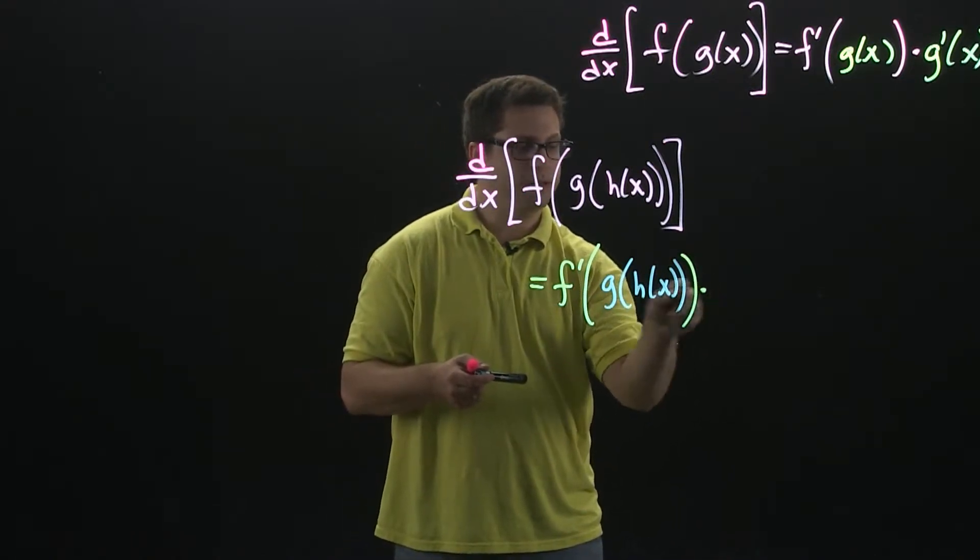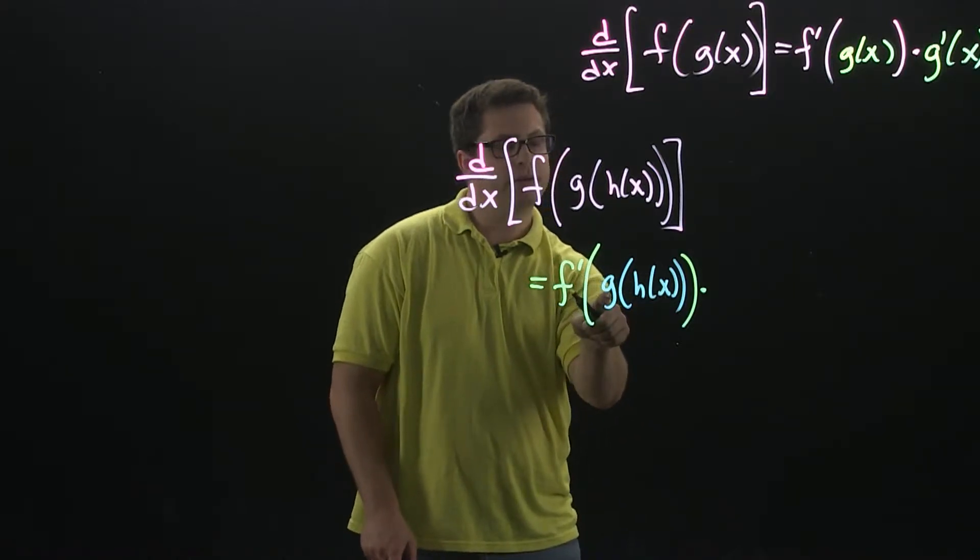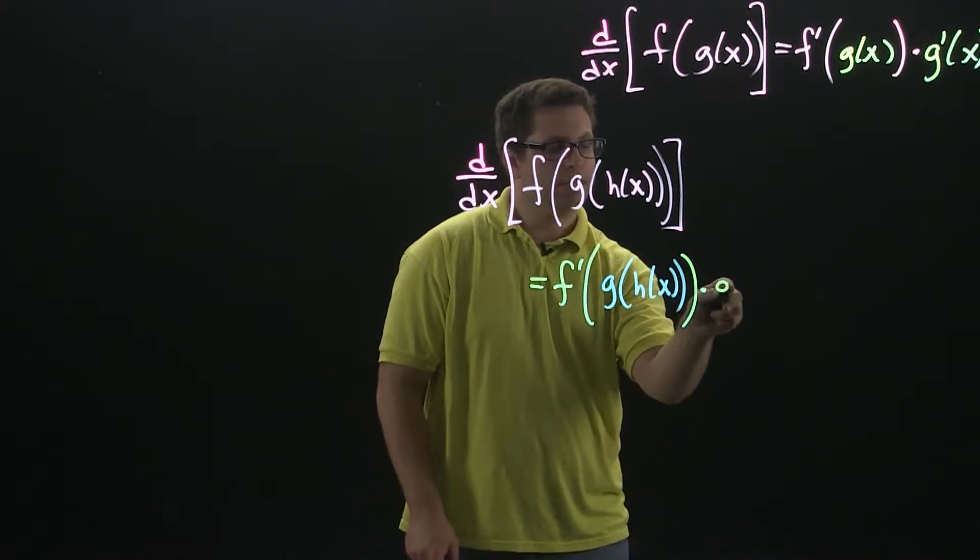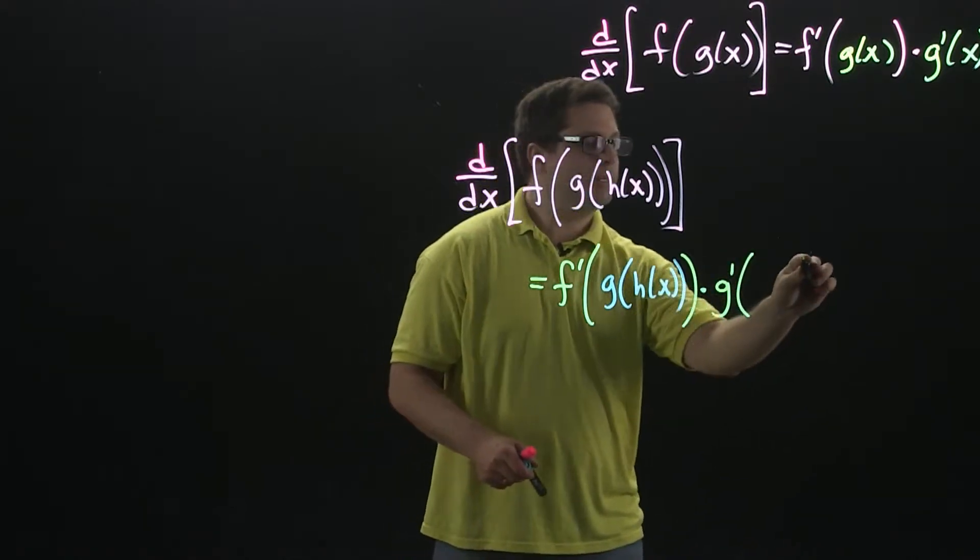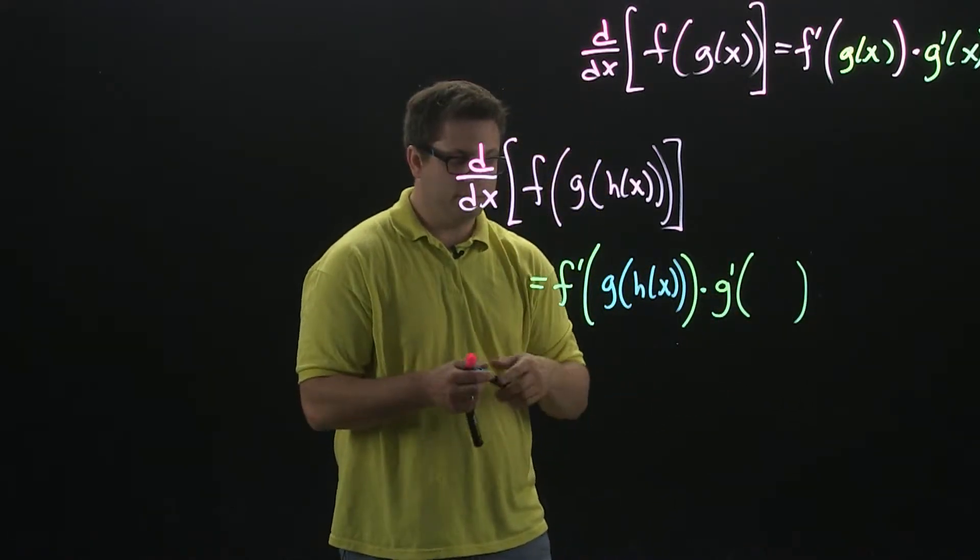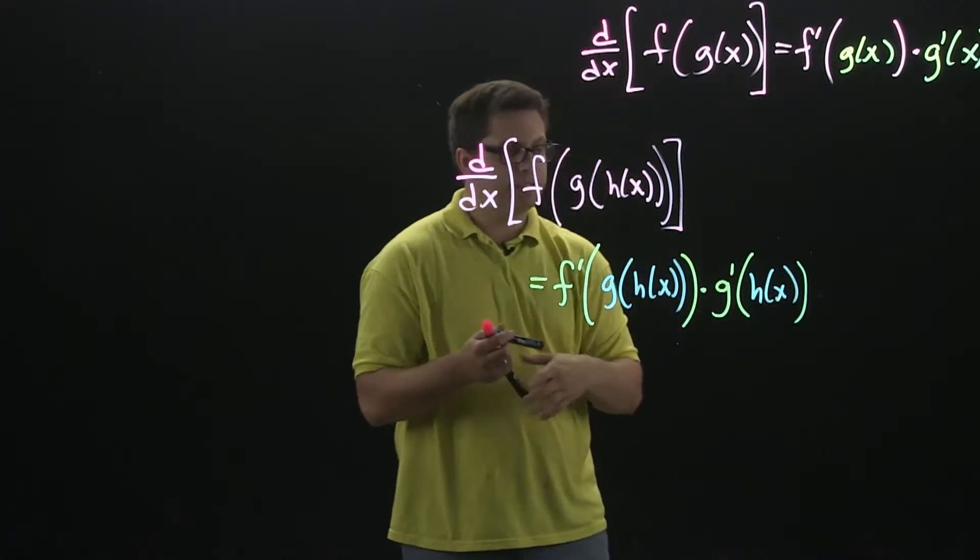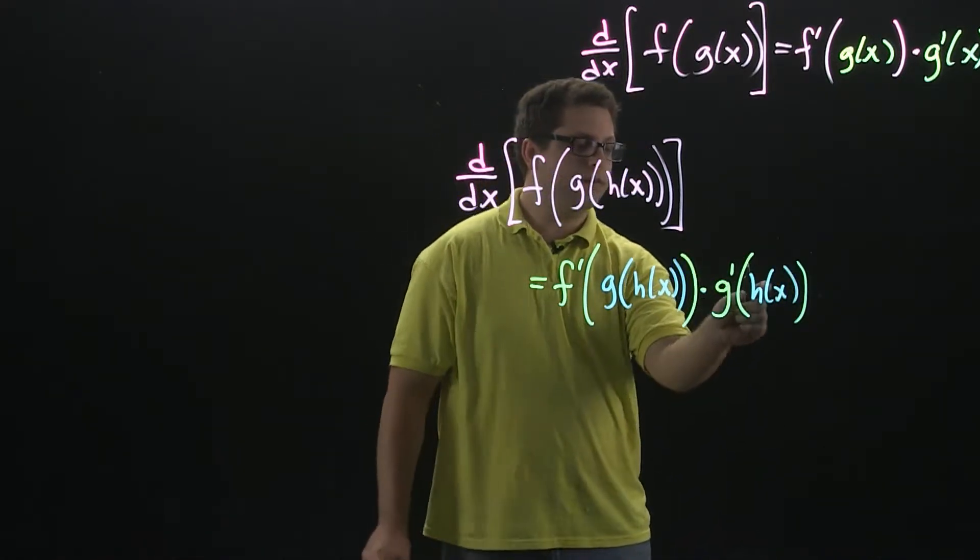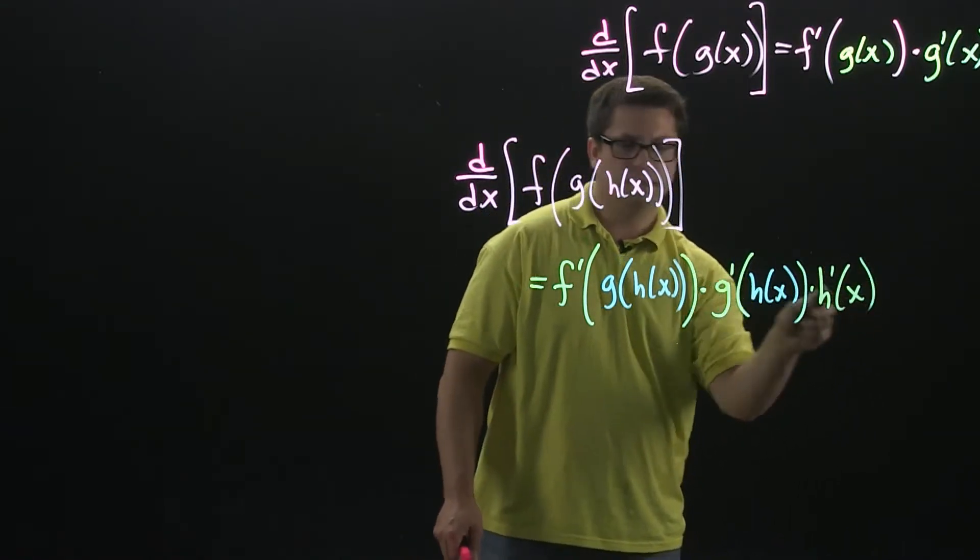Then you're going to multiply by the derivative of the inside. Well, the derivative of the inside is another chain rule, so its outside function is g. So we're going to have g prime, and then you will leave its inside alone, which is h of x. And then finally, you take the derivative of inside g, which is h, and so that will be h prime of x.